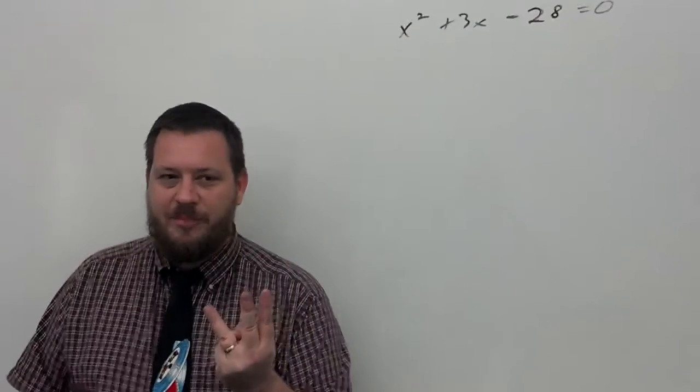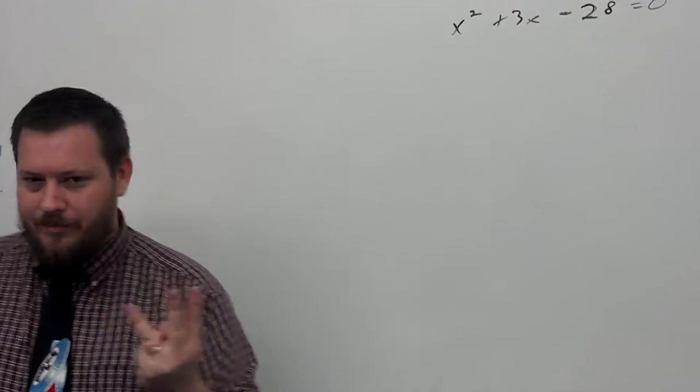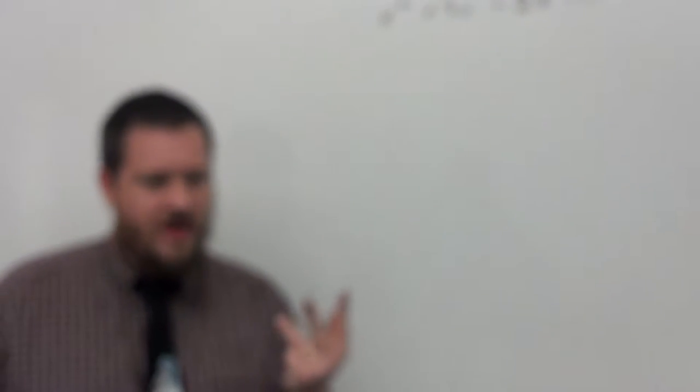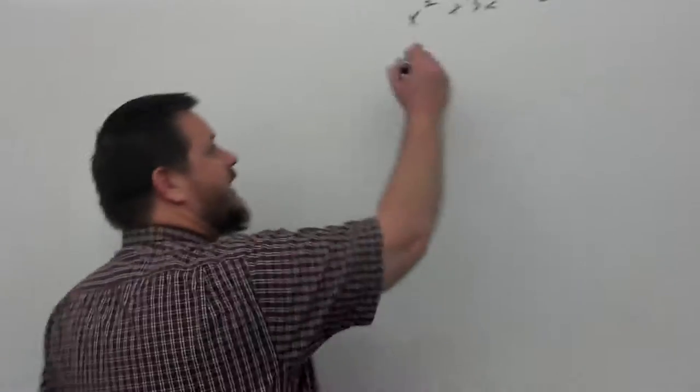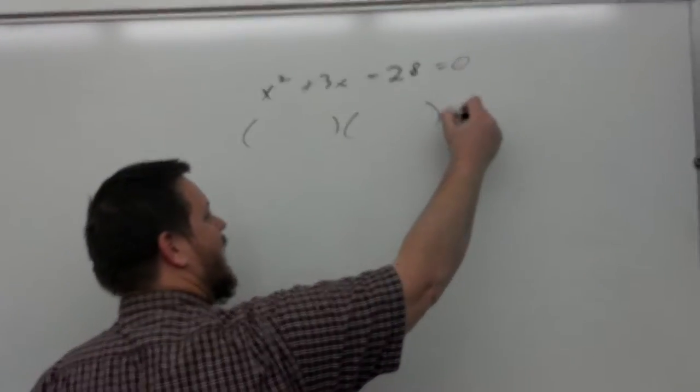Of the three, quadratic formula, completing the square, and factoring, which one is usually the easiest and fastest? Factoring. However, it's not always possible. Bummer. And so completing the square and quadratic formula, you can always use, but they just require more steps. If you can factor, factoring is the easiest and fastest. So in a case like this, we would factor this how?